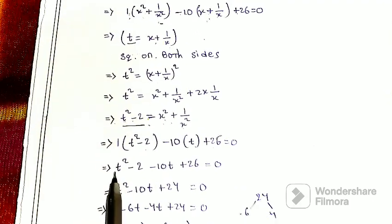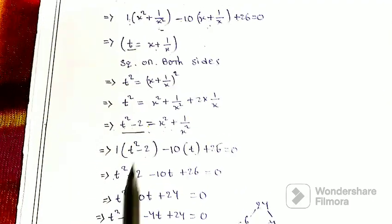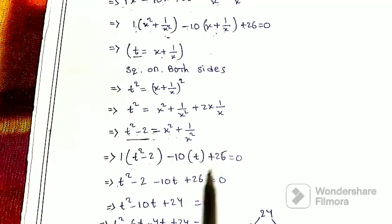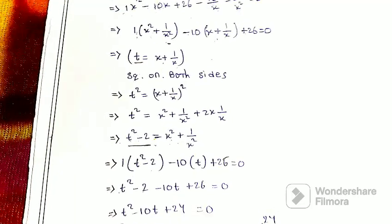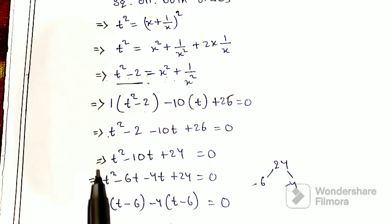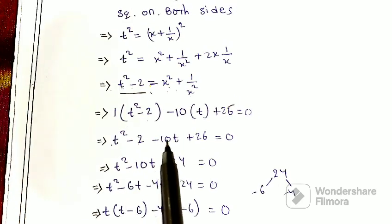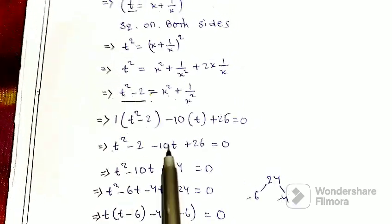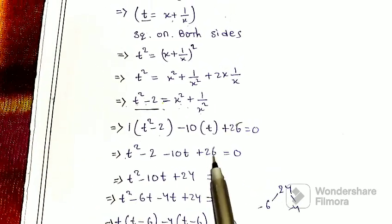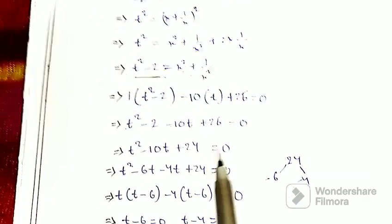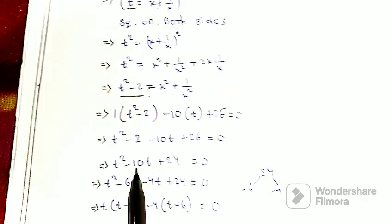So we get t² minus 10t plus 26 minus 2 equals 0, which simplifies to t² minus 10t plus 24 equals 0.